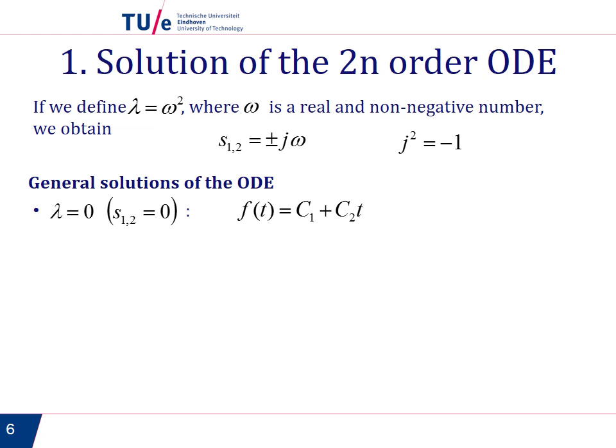Next, we define λ = ω², where ω is also a real and non-negative number. Then s is ±jω.